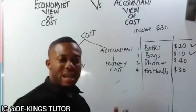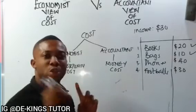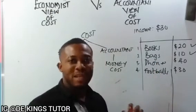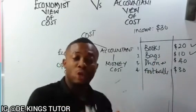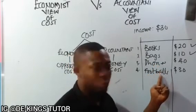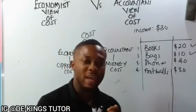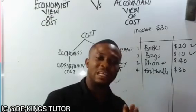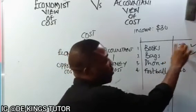Now, let us explain how the economist and the accountant see costs. The economics cost will be in terms of phone and football — these are the costs left unsatisfied in order to satisfy the more pressing wants, normally called the alternative foregone. For the accountant, they are not bothered with what you left; their main focus is the actual expenses, which is books and bags. This is what we call the money cost.